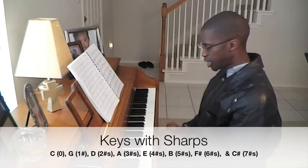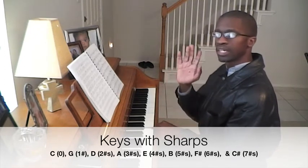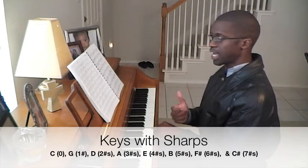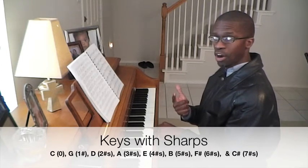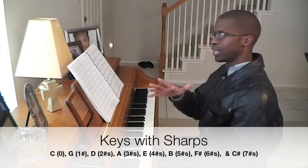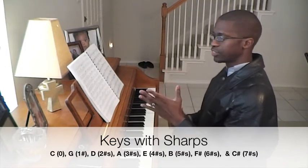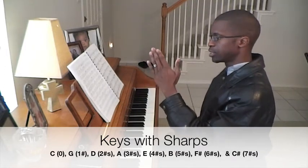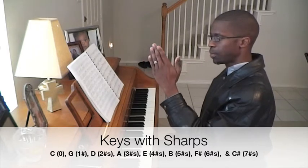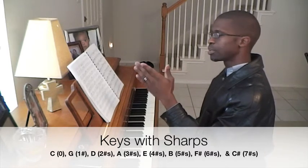You go up a fifth from C — one, two, three, four, five — that is G. G has one sharp, and that sharp is going to be F. So when you work your way around the circle of fifths, every time you go to the next key you add a sharp. C has zero. Go up a fifth from C, G has one sharp.